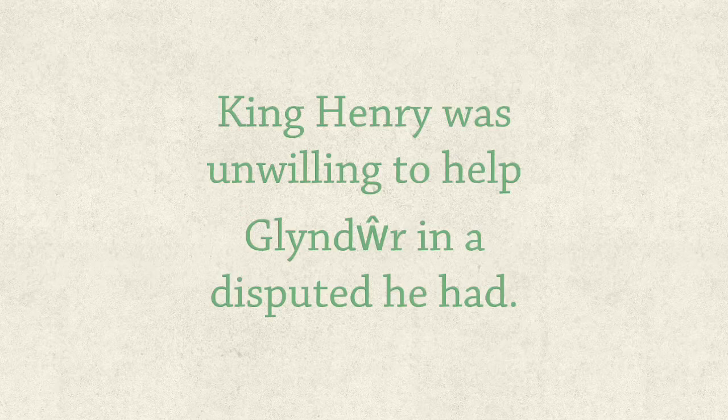On the 16th of September 1400, a group of Owen's supporters proclaimed him Prince of Wales, and then they began to attack English settlements in north-east Wales. But then they disappeared into the mountains and retreated somewhat.